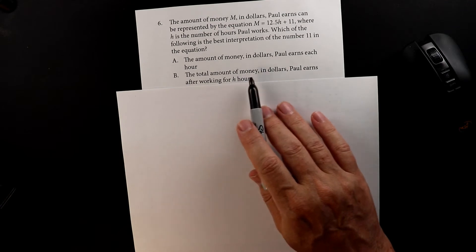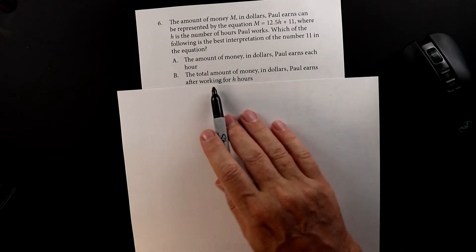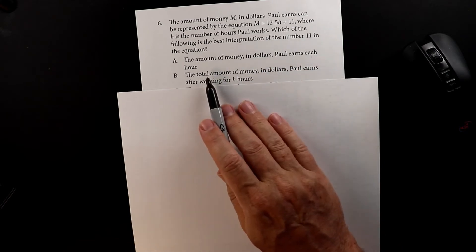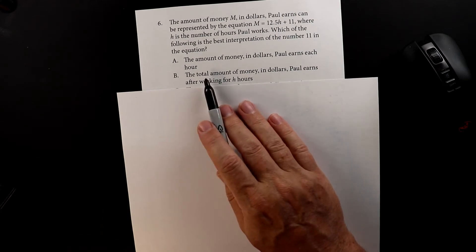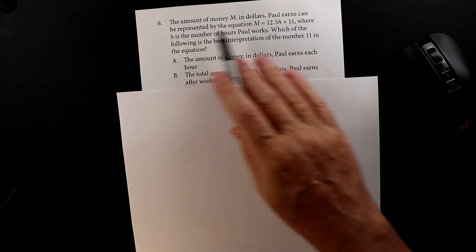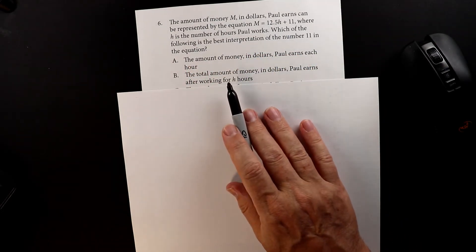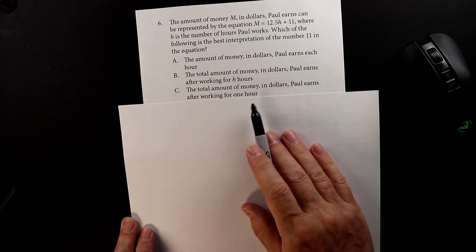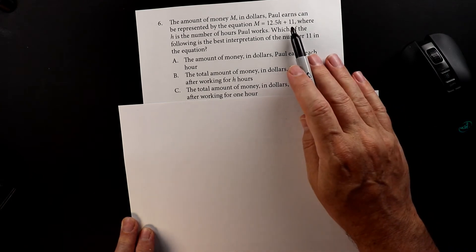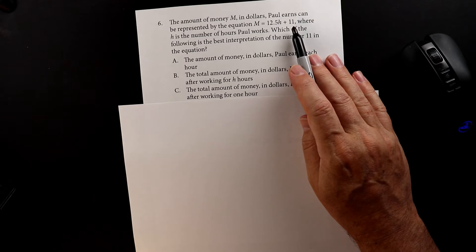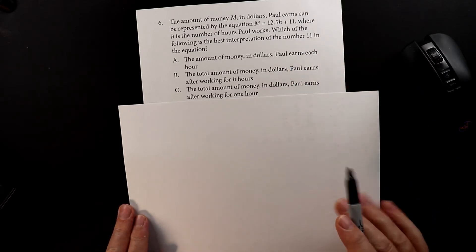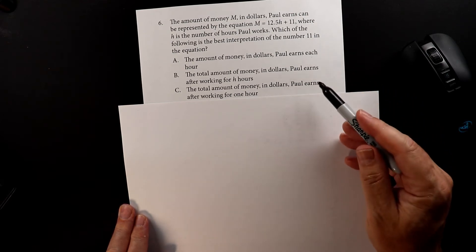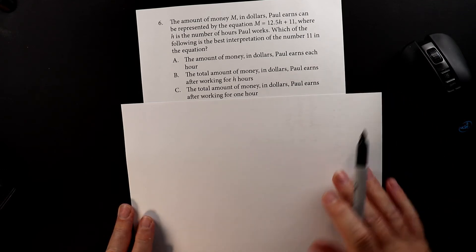The next choice is the total amount of money in dollars Paul earns after working eight hours — so they're asking if 11 is the total. Is he making just $11? That's not the case because m is the total amount he makes. The next choice is the amount of money Paul earns after working one hour — so again, is $11 his hourly rate? Since this choice and the first choice are essentially the same, you can cross off both of those, which leaves us with the remaining option.